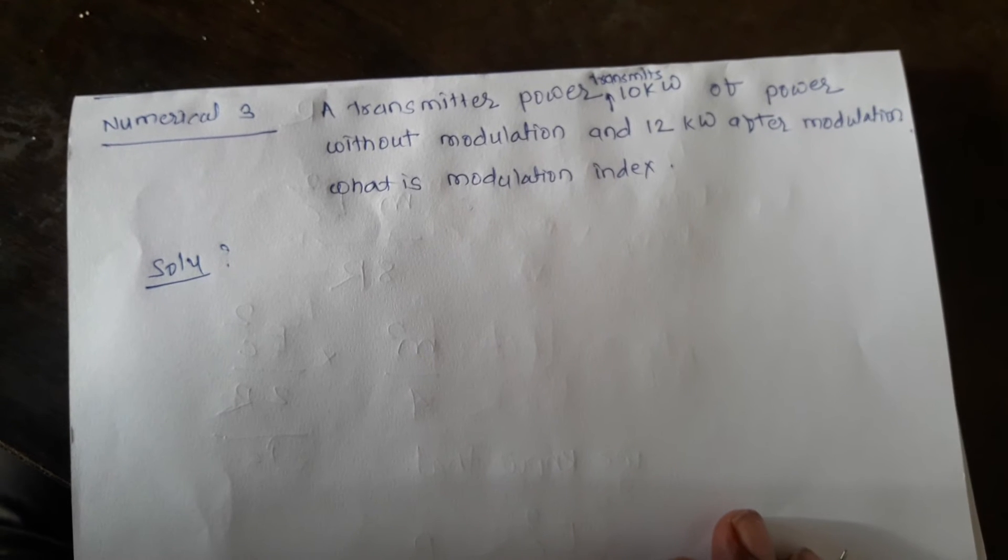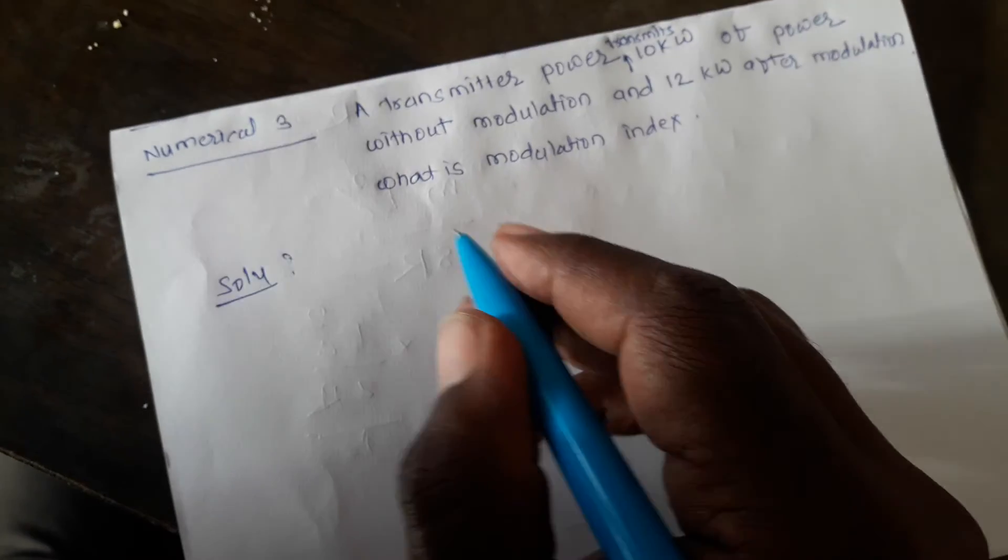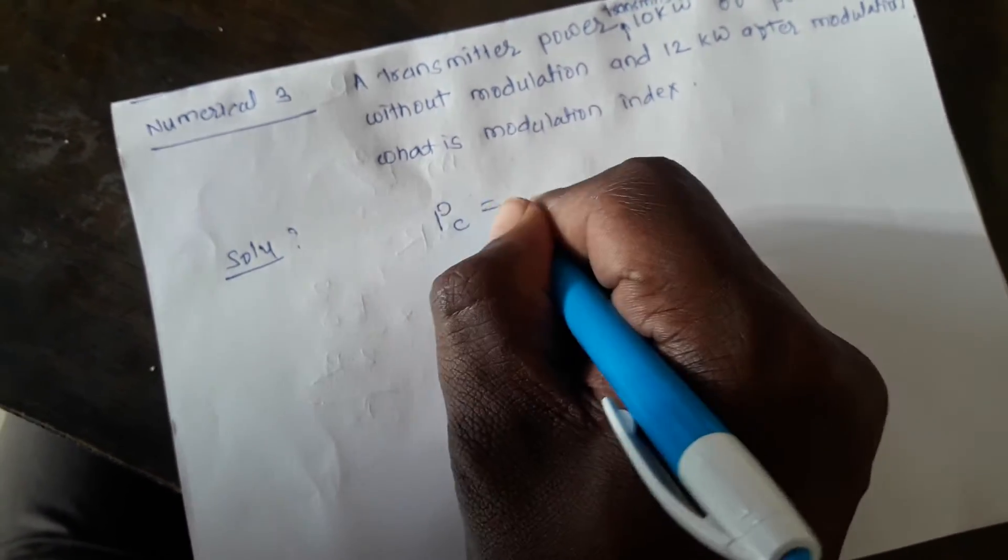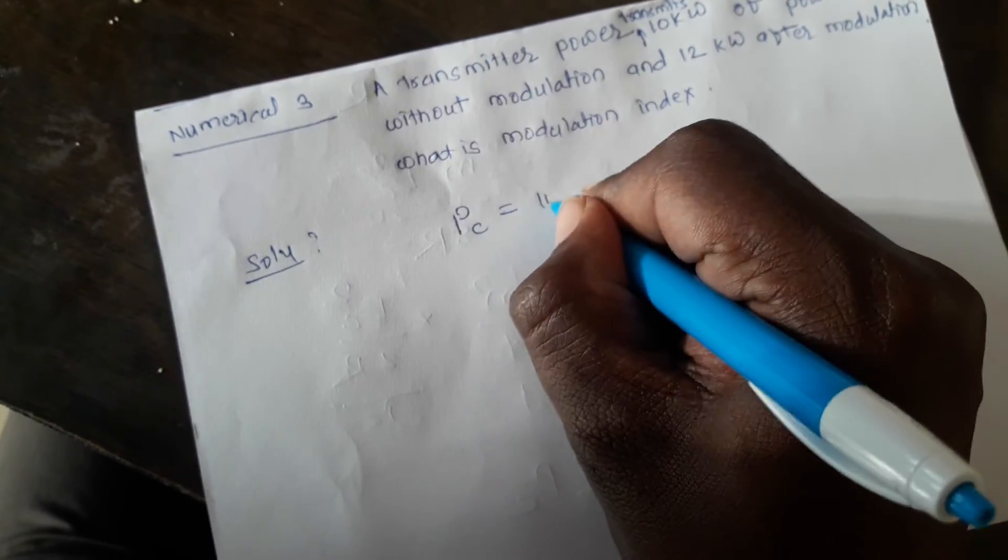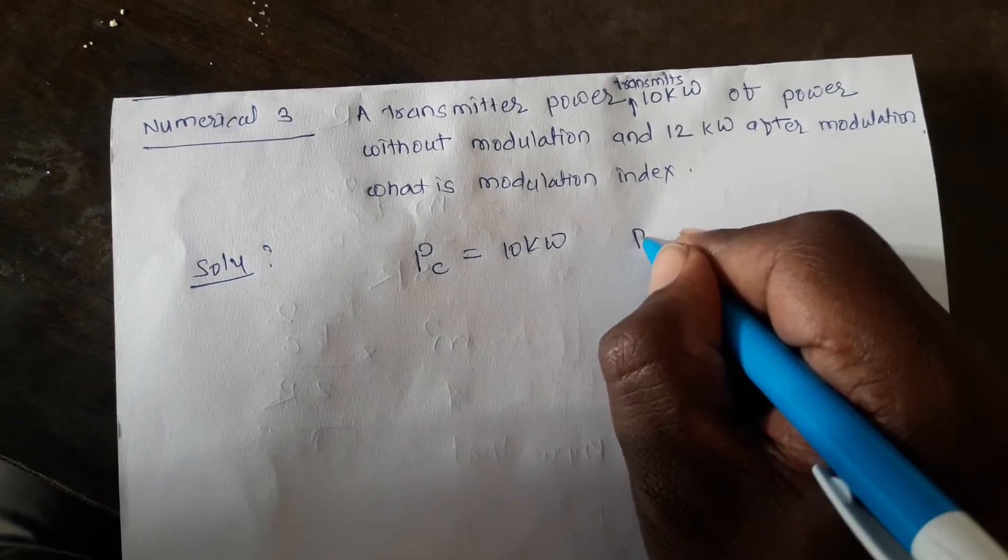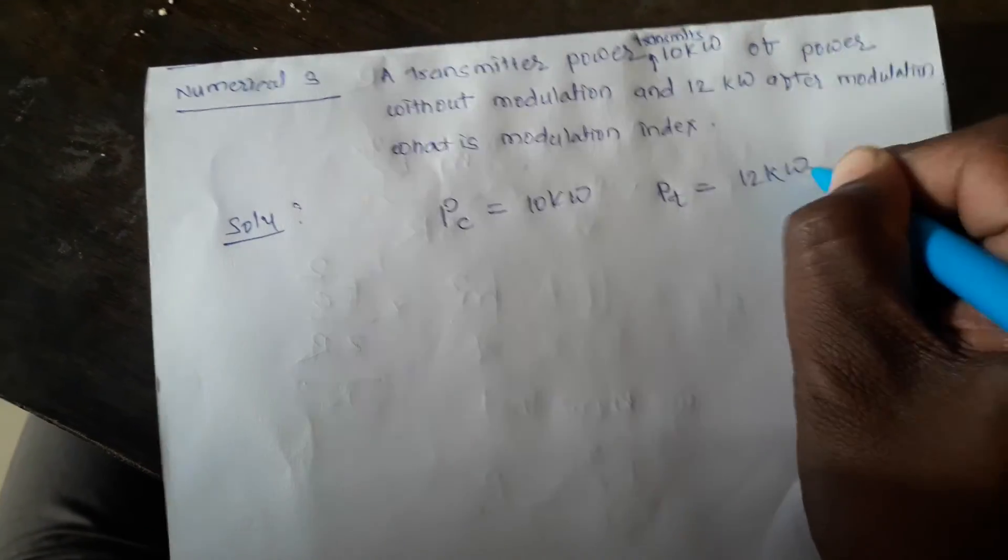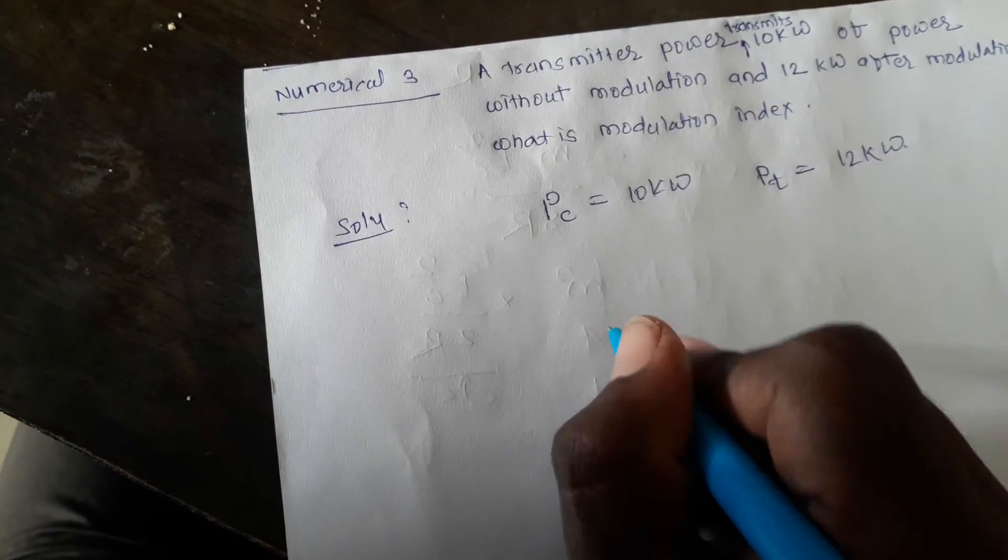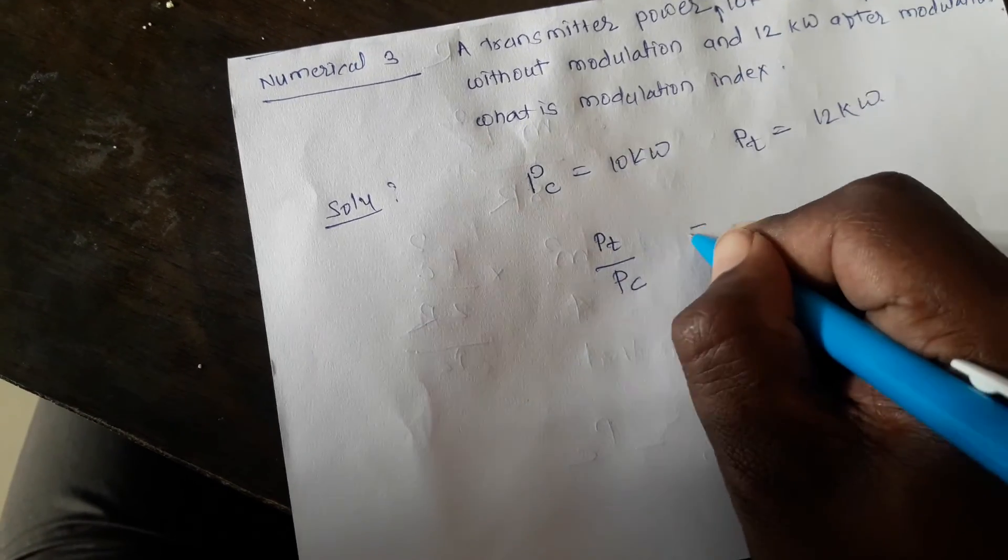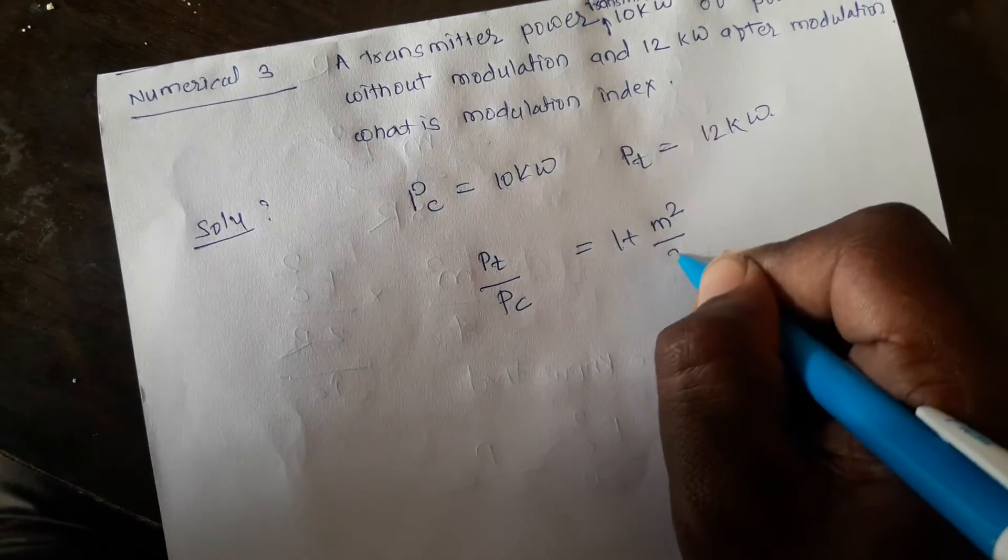First we must know that transmitter power without modulation means the power of the carrier. So carrier power PC is 10 kW, and power of transmitter after modulation PT is 12 kW. As per these two values, we know that PT by PC equals 1 plus m squared divided by 2.